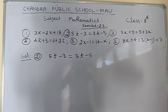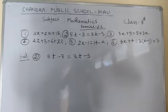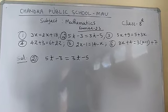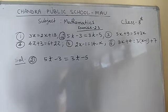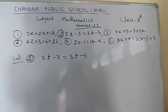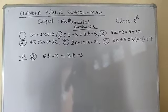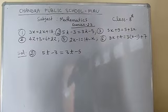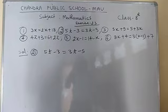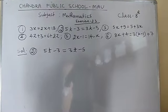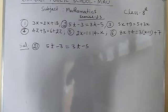Welcome students to the online classes presented by Chandra Public School Mahu. I am Celis Kumar Yadav and today I am going to start Exercise 2.3. This exercise is based on linear equations, where you will get variable terms on both sides of the equation — in the left as well as in the right. You need to follow the same method applied in Exercise 2.1. I have written the first 6 questions on the board and will give solutions to certain questions; the remaining ones you need to solve as homework.